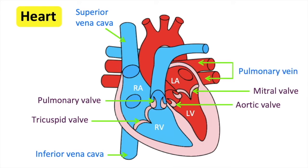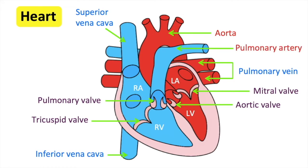The pulmonary vein carries oxygenated blood from the lungs to the heart.